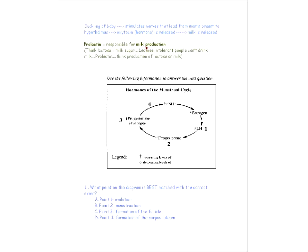There's a hormone that goes hand in hand with oxytocin: prolactin causes milk to be produced in the first place. Think of lactose intolerance — lactose is milk sugar. If you look at the word prolactin, 'lac' relates to milk and 'pro' means production — so prolactin is involved in milk production. That'll help you remember that prolactin produces milk, while oxytocin releases it.